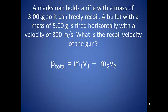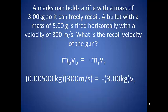We know that momentum is conserved along the horizontal direction, so the total momentum must be equal to the sum of the momentum of the bullet and the momentum of the rifle after the shot. From here we can plug in our knowns and solve for the velocity of the rifle. We end up with negative 0.5 meters per second.